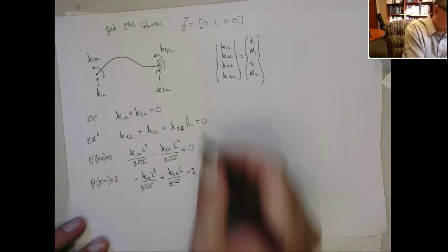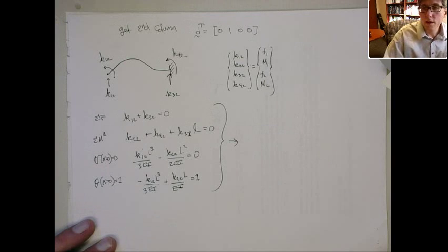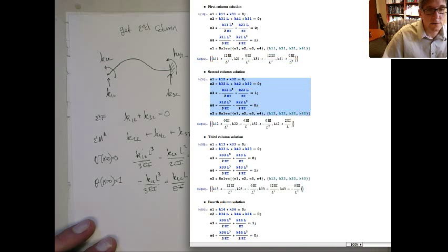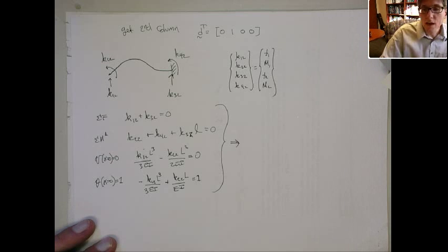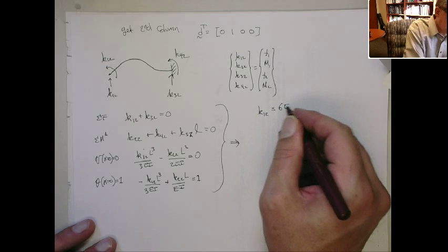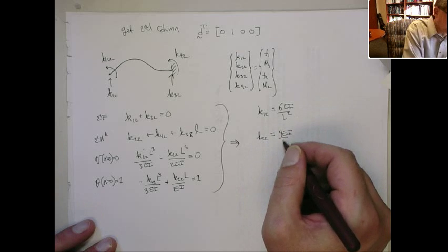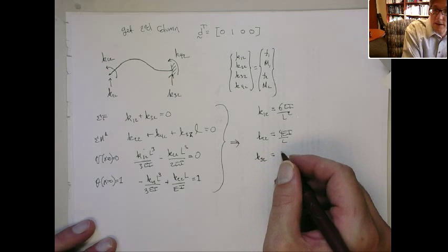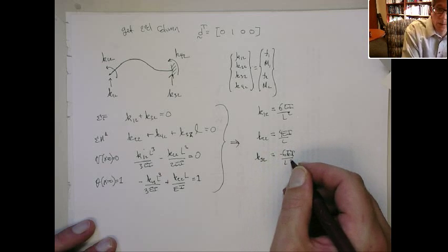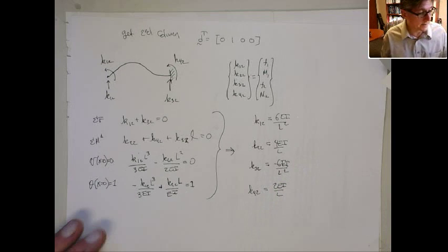So those are the four equations, and now I'm going to solve those for K1,2, K2,2, K3,2, and K4,2. I do that in Mathematica so I don't mess up the algebra. This is kind of a long derivation, and that gives us: K1,2 is equal to 6EI over L squared; K2,2 is 4EI over L — this is the second column going down; K3,2 is minus 6EI over L squared; and K4,2 is equal to 2EI over L.